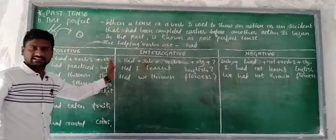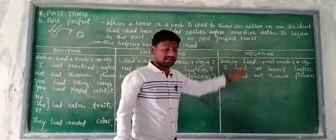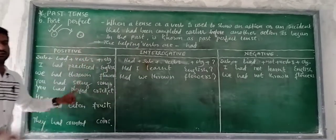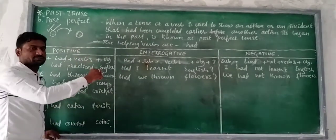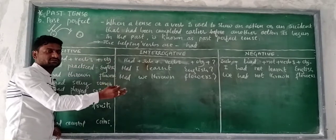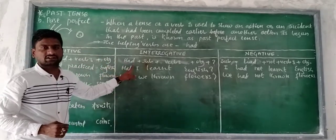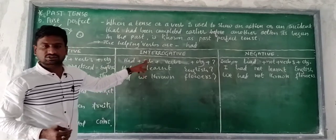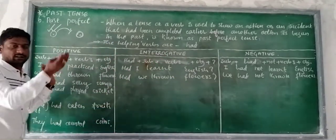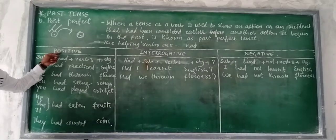I have made a diagram with three columns — positive, interrogative, and negative. On the basis of these columns I have made the sentence structure for each. Look at the first one in the positive column.